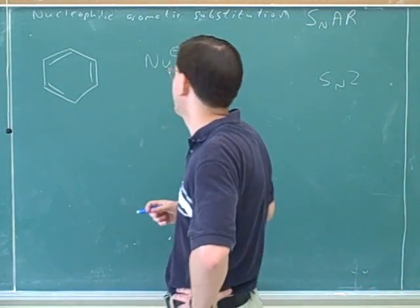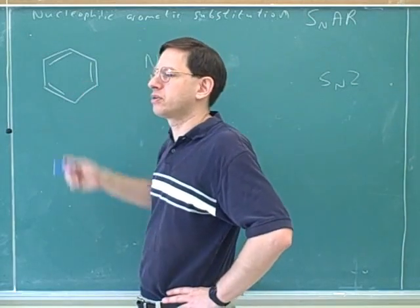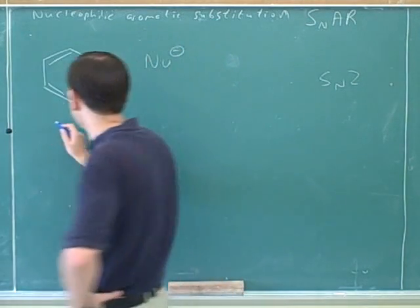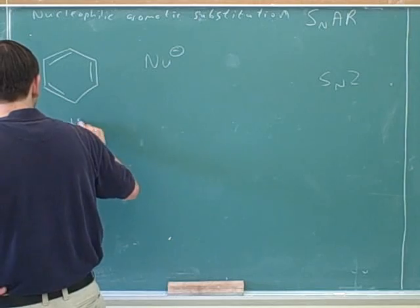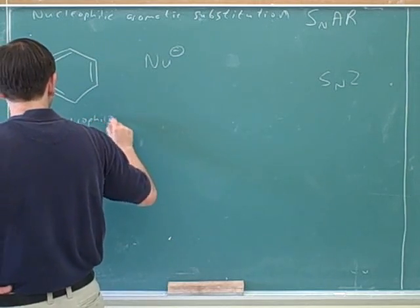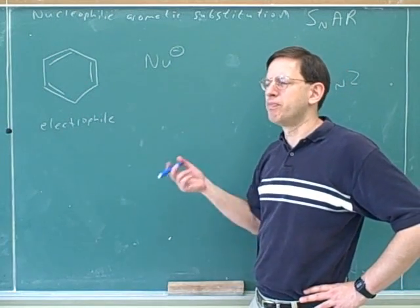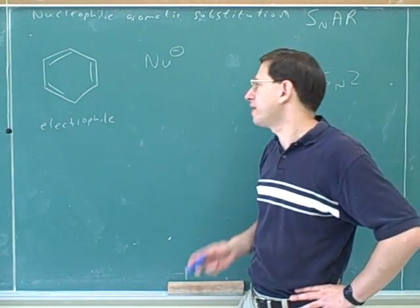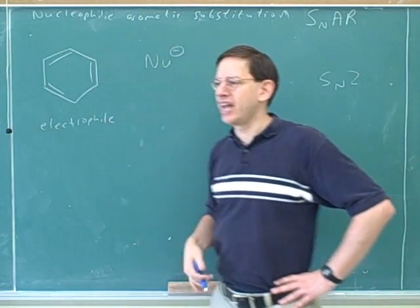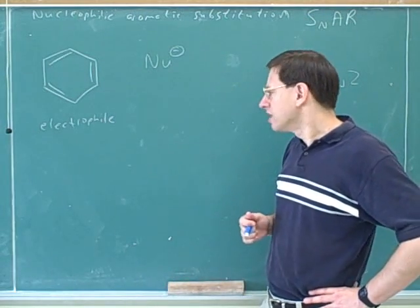Even though this is called nucleophilic aromatic substitution, the benzene is going to play the role of the electrophile. Now, we know that it can be a little difficult to get benzene reactions to happen because most any kind of benzene reaction has to start by unforming the aromaticity. And benzene doesn't like that.